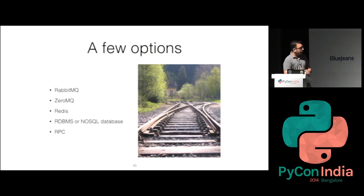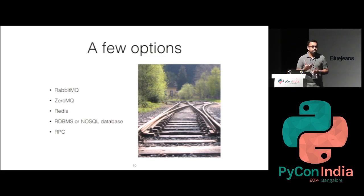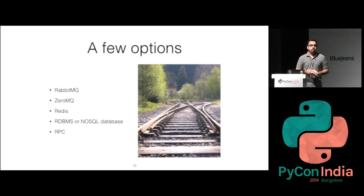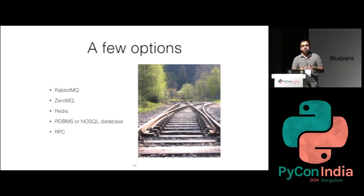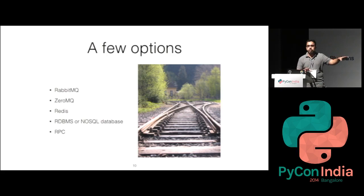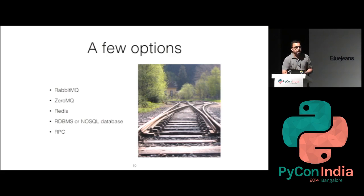Next is ZeroMQ (0MQ). This was forked from AMQP around version 0.8 or 0.9. It does not have any message broker — each client starts an instance of ZeroMQ and publishes on that. It's like a raw socket connection with extra functionality. The publisher instantiates ZeroMQ and publishes; the subscriber instantiates ZeroMQ and subscribes, and they work without a central coordinating mechanism. It also provides all the messaging semantics: queues, pub-sub, request-reply.